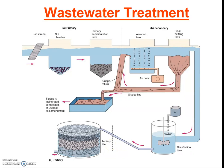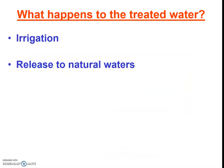Part of your assignment this week is to figure out where and how your wastewater from your home is treated. You will also be asked to figure out what happens to the water after it is treated. Generally, it's either released to natural water bodies — the ocean, the bay, or a river — or it's used for local irrigation, but you'll have to see what's done in your community.